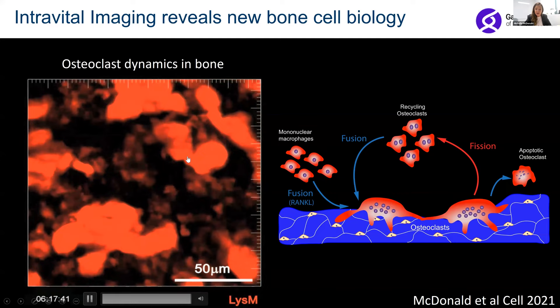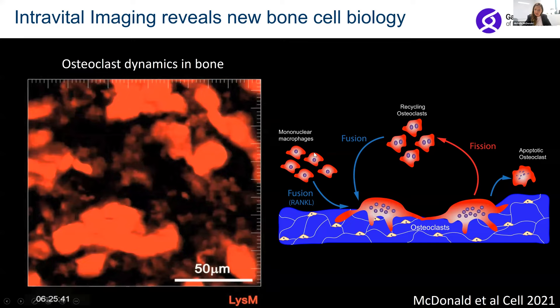This diagram shows what we've learned: previously we understood osteoclasts form through fusion of small cells into large multi-nucleated cells that resorb bone, then simply undergo apoptosis — cell death — when they finish their job. Using our imaging approach, we've learned these cells actually undergo cycles of fission, fusion, and recycling. This is a really exciting discovery because the recycling osteoclast has been determined to be a distinct cell — defining a completely new cell type inside bone.